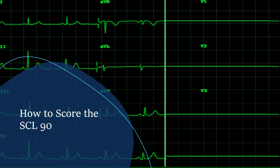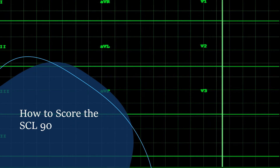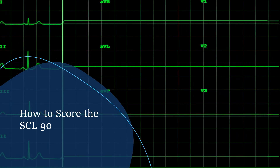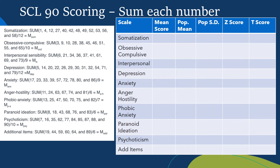Today I'm going to cover how to score the SCL-90 and go in depth about what you have to do to get an accurate score. To start off, you'll need a piece of paper or chart — you can make it in Excel, Word, or any chart tool — and it should have listed: which scale you're using, the mean score, the population mean, the population standard deviation, the z-score, and the t-score. I'm going to talk about how to get each one of those scores.